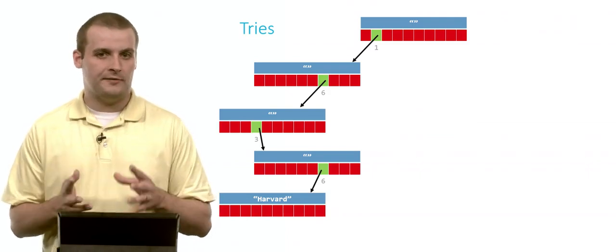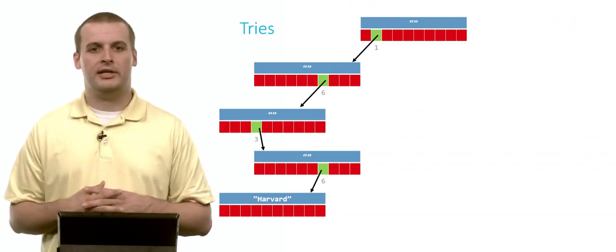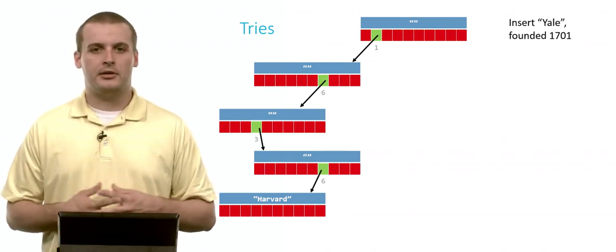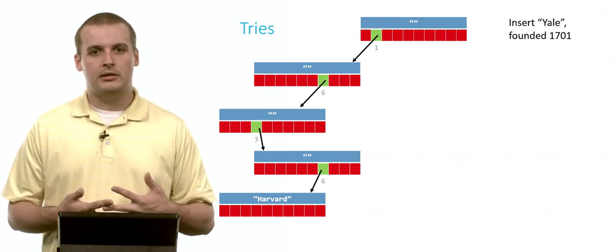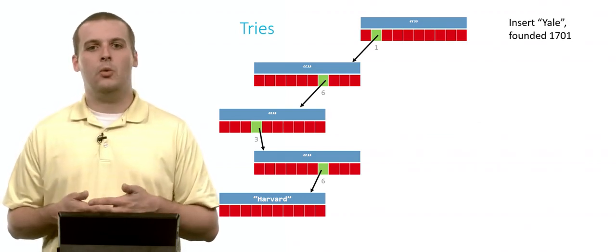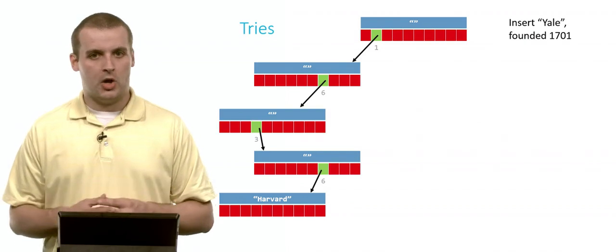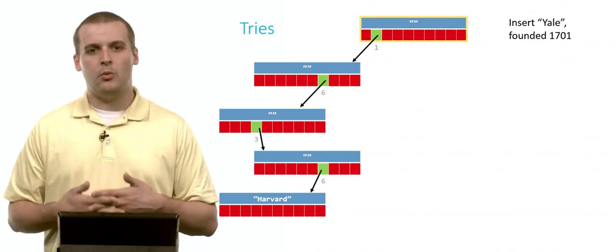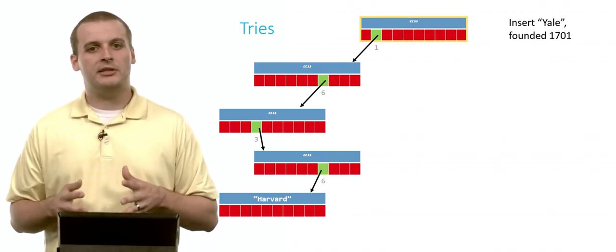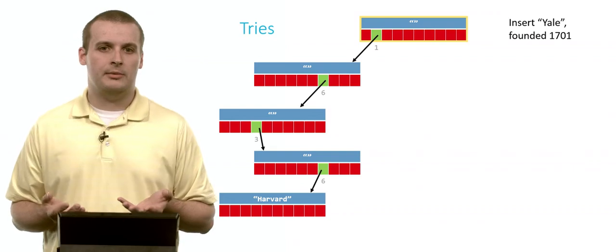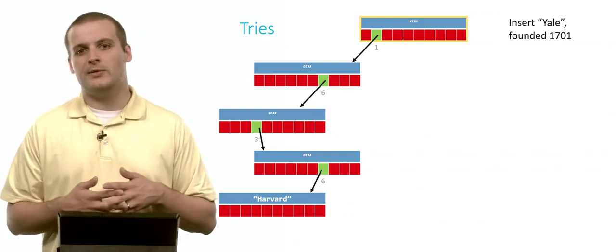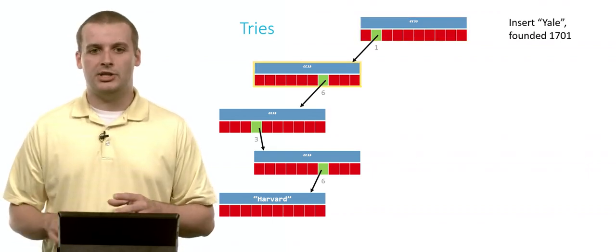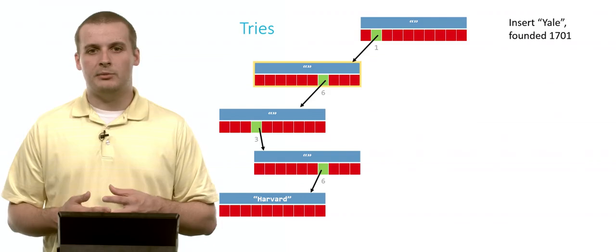We're going to do two more insertions. Now let's insert another university. Let's insert Yale into this trie. Yale was founded in 1701. So we'll start at the root, as we always do. The first thing we want to do is go down the one path. That's the first digit of our key. Fortunately, though, we don't have to do any work this time. The one path has already been cleared. I cleared it previously when I was inserting Harvard at 1636. So I can safely move down one.